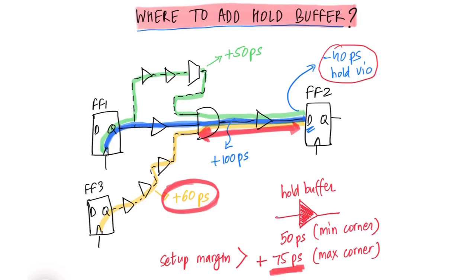Again, if we add our hold buffer right at the Q pin of the FF1 flop, then it will cause setup timing violation on our green path because we do not have enough setup margin or setup slack on this path.